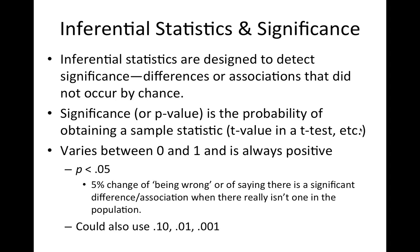Basically what we're saying with p < 0.05 is that we're willing to accept a 5% chance of being wrong — of saying there is a significant difference or association when there really isn't one in the population. We could also use 0.10, which some call marginally significant. People will often also report p < 0.01 or p < 0.001, indicating greater certainty that we're not wrong.